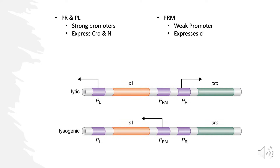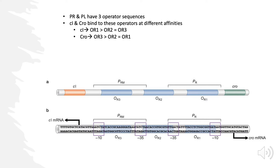Now let's add another layer. These promoters — PR, PL, and PRM — have associated operator sequences: OR1, OR2, and OR3. Depending on whether we're in lytic or lysogenic growth, the proteins produced will bind to these operator sequences at different affinities. That's a loaded concept, so let's break it down.